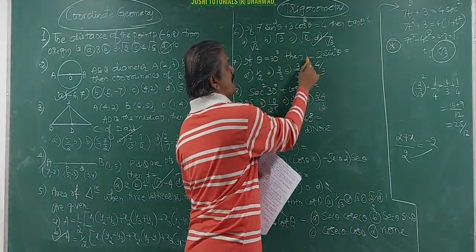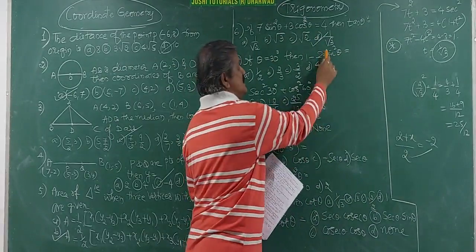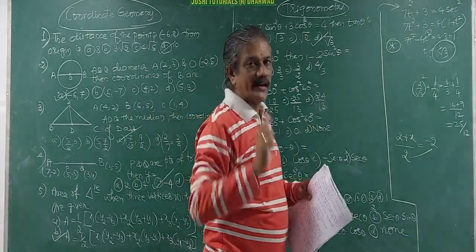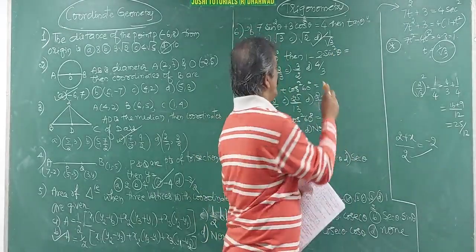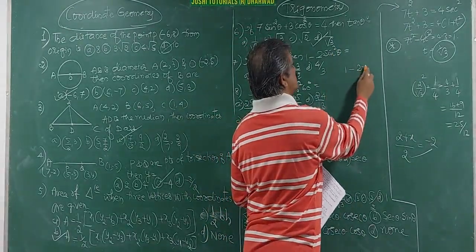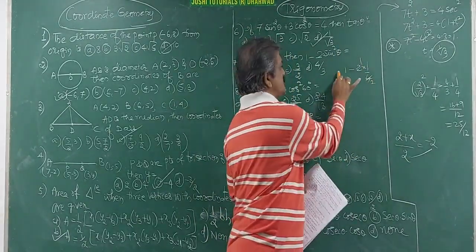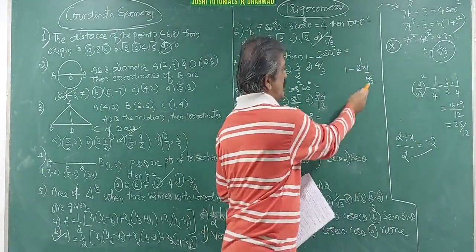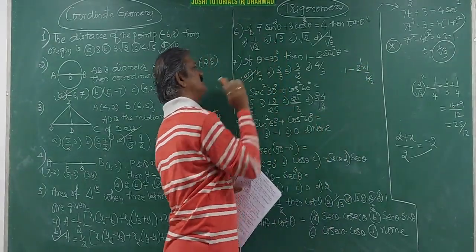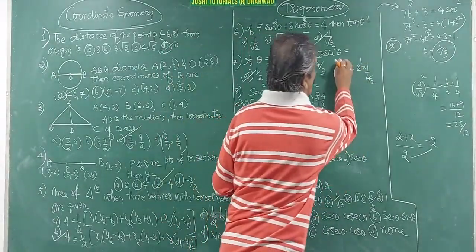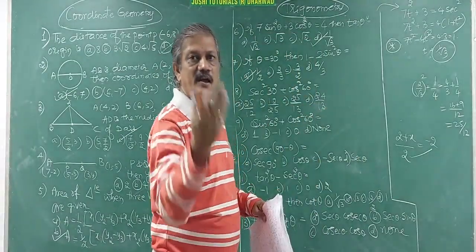If θ = 30°, what is the value of 1 − 2sin²θ? Sin 30° = 1/2, so sin²30° = 1/4. Then 1 − 2×(1/4) = 1 − 1/2 = 1/2. The answer 1/2 is in the options. This should take about half a minute.